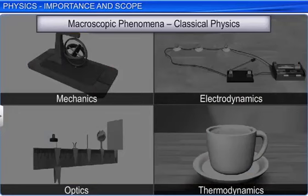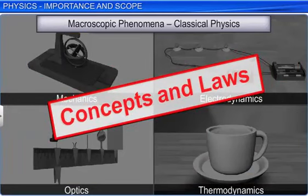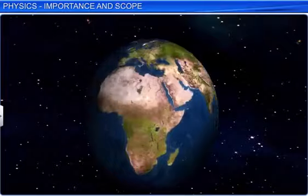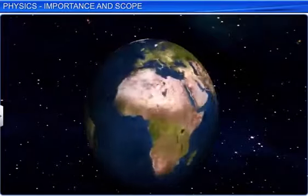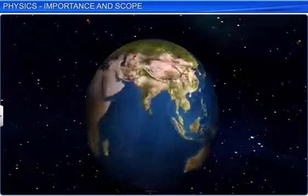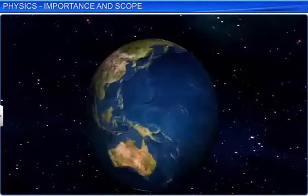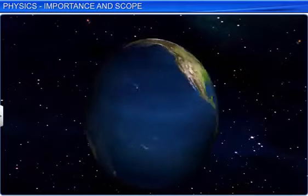In physics, we attempt to explain various physical phenomena in terms of few concepts and laws. We see the physical world as manifestation of some universal laws in different domains with the required conditions applicable as per the contexts.